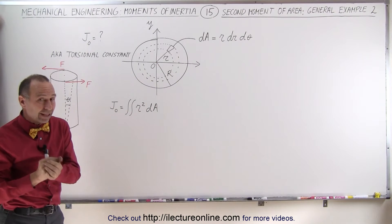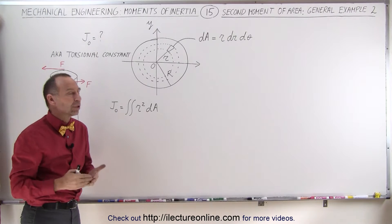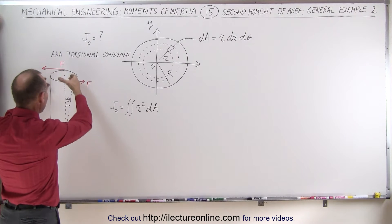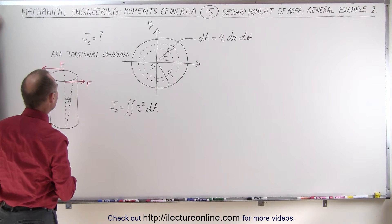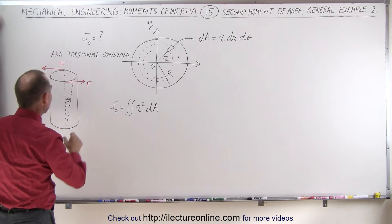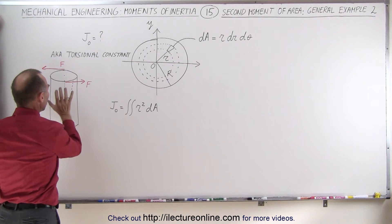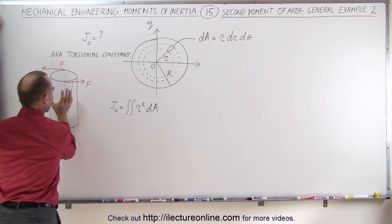Now finding the second moment of area there is akin to finding what we call the torsional constant. If we assume that we have a circular pillar, or maybe a cylindrical pillar might be a better description, and you apply a torque at one end of that pillar, you tend to have what we call torsion.